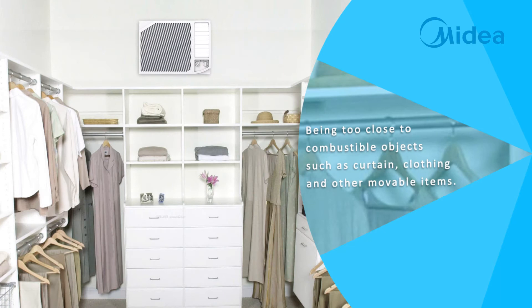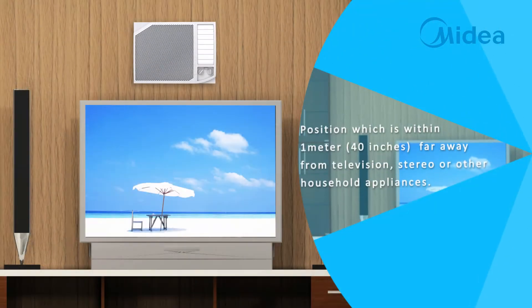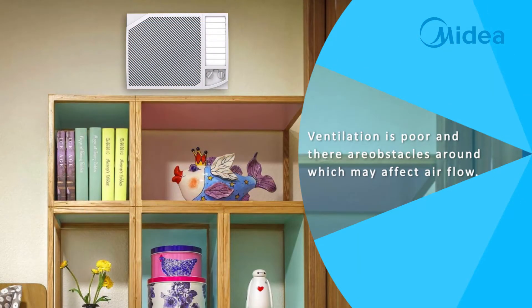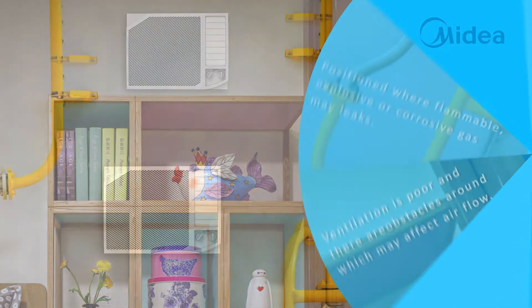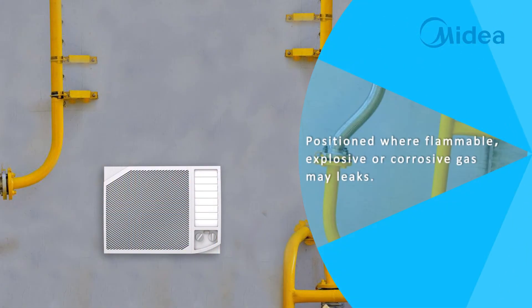Avoid being too close to combustible objects such as curtains, clothing, and other moveable items. Avoid positions which are within 1 meter (40 inches) of a television, stereo, or other household appliances. Avoid positions where ventilation is poor and there are obstacles around which may affect air flow, or where flammable, explosive, or corrosive gas may leak.